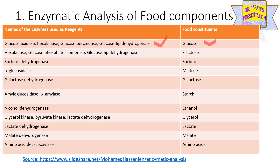Hexokinase, glucose-6-phosphate isomerase and glucose-6-phosphate dehydrogenase enzyme activities are estimated in order to check glucose content. Sorbitol dehydrogenase enzyme activity is measured in order to check sorbitol content present in food. Alpha-glucosidase enzyme activity is measured in order to check glucose content. Galactose dehydrogenase enzyme activity is checked in order to measure galactose content. Amyloglucosidase and alpha-amylase activities are measured in order to check starch content present in food material.